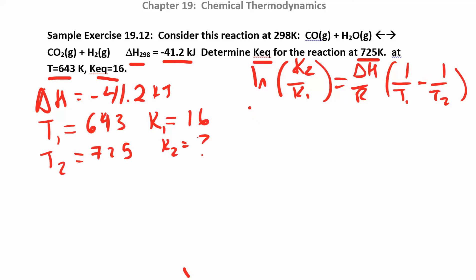Now we can plug in. We have natural log of K2, that's what we're looking for, over K1. Delta H is negative 41.2, and that's in kilojoules, divided by 8.314. I'm going to put that in kilojoules as well. 1 over T1, which is 643, minus 1 over 725.